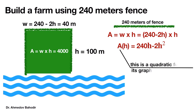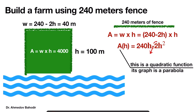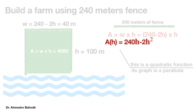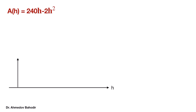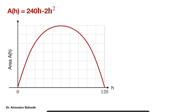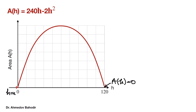Looking at this function, we can see that it is a parabola which is concave downward, because the second derivative is negative and also because of the negative sign on the h-squared term. When h equals 0, A(h) equals 0, and when h equals 120, A(h) equals 0 as well. The minimum values are at the borders of the interval, and the maximum value is at the vertex of the parabola where h equals 60.